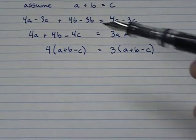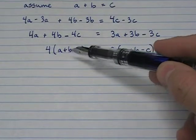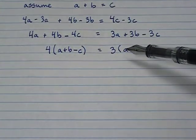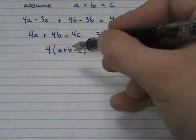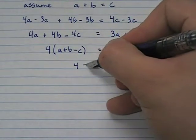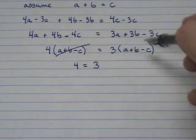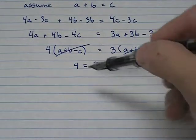And then, because I have this same quantity of 4 times this quantity equals 3 times this quantity, I can divide both sides by that quantity, and they cancel out, and I get 4 equals 3. So those go away, and I get 4 equals 3.